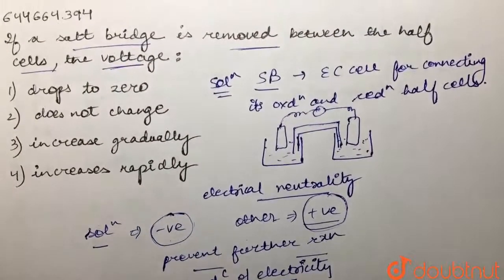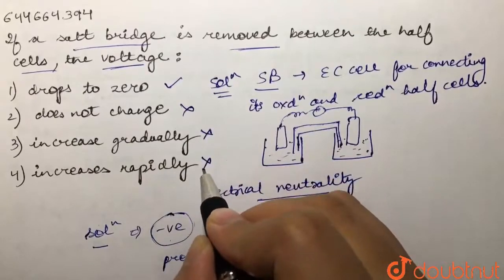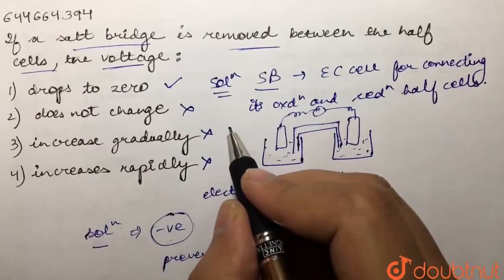drops to zero—it would be correct. Does not change is not correct. Increases gradually is not correct. Increases rapidly is not correct. It eventually drops to zero.